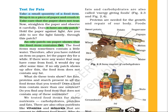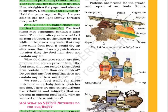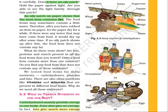We have some sources here in figure 2.3 — these are the sources of carbohydrates: bajra, rice, wheat, sweet potato, potato, sugarcane, papaya, melon, mango, maize. These are all carbohydrate-rich sources of food.